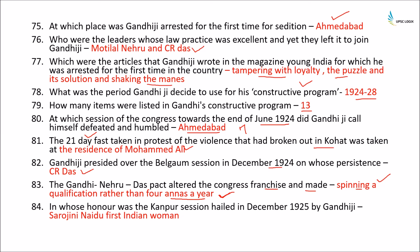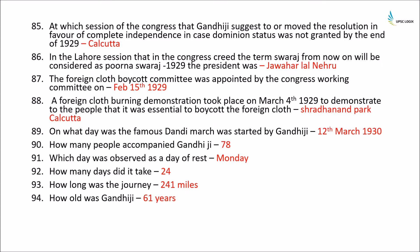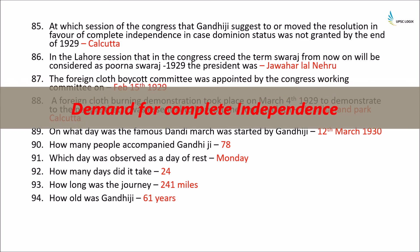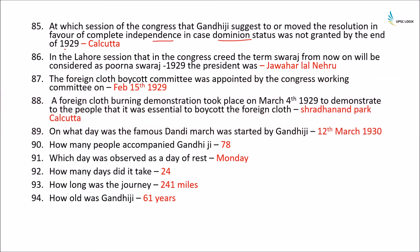The Kanpur session was held in December 1925, with Gandhiji presiding in honor of Sarojini Naidu, the first woman president of the Congress. At the Calcutta Congress session of 1928, Gandhiji moved a resolution for complete independence in case dominion status was not granted by the end of 1929. At the Lahore session in 1929, under president Jawaharlal Nehru, Congress decided that Swaraj was to be considered as Poorna Swaraj. A foreign cloth boycott committee was set up on February 15th, 1929, and a foreign cloth burning demonstration took place on March 4th, 1929 at Shraddhanan Park, Calcutta.